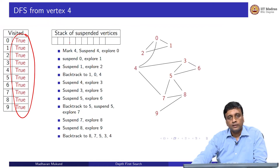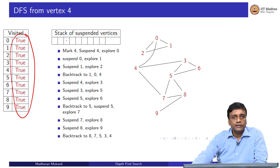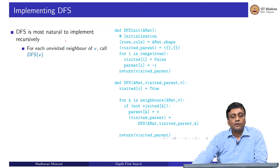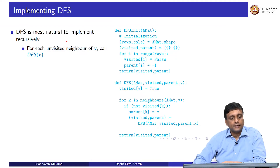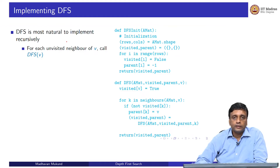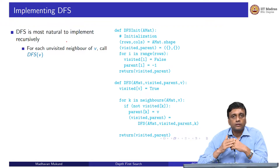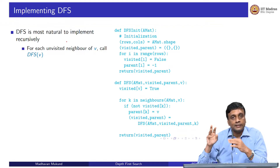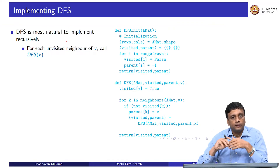This is how depth first search works with a stack. When we implemented breadth first search we had to explicitly construct a queue. You might expect to do the same for DFS with a stack, but it turns out you can implement depth first search using recursion, and recursion implicitly keeps a stack. The key thing about recursive DFS is that you must separate out the initialization from the recursive call — otherwise, every call would reinitialize visited and parent, which would not work.